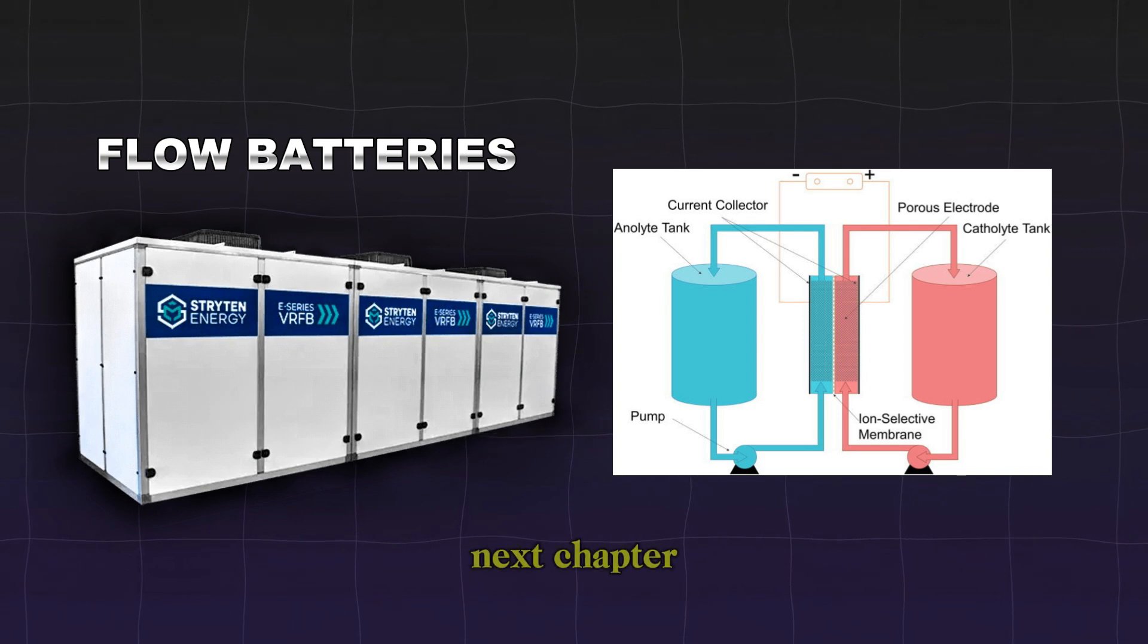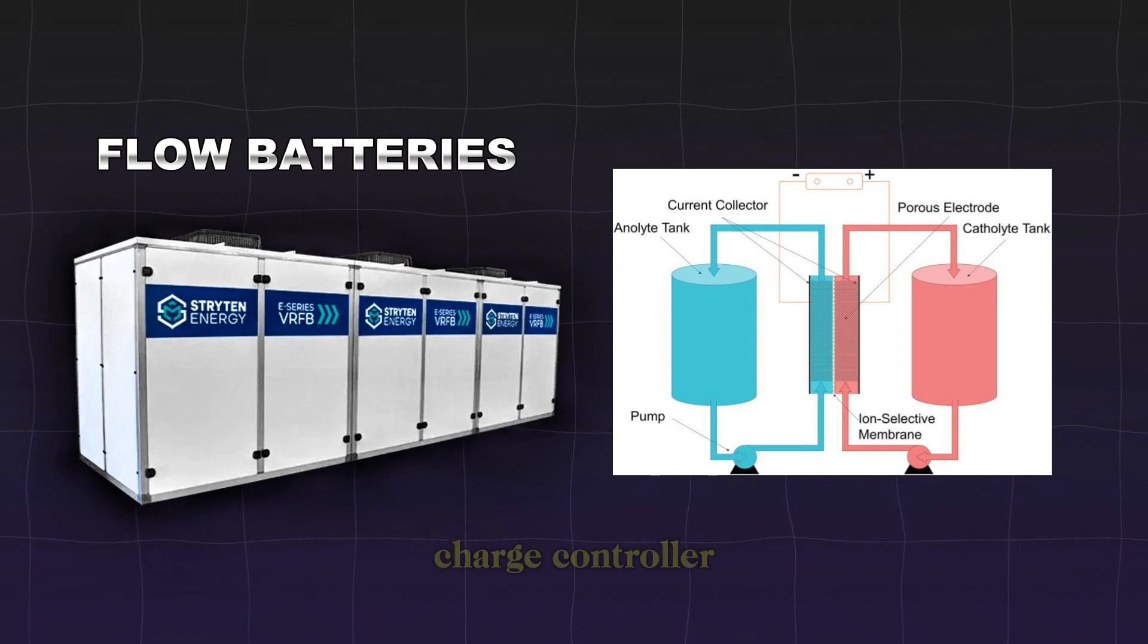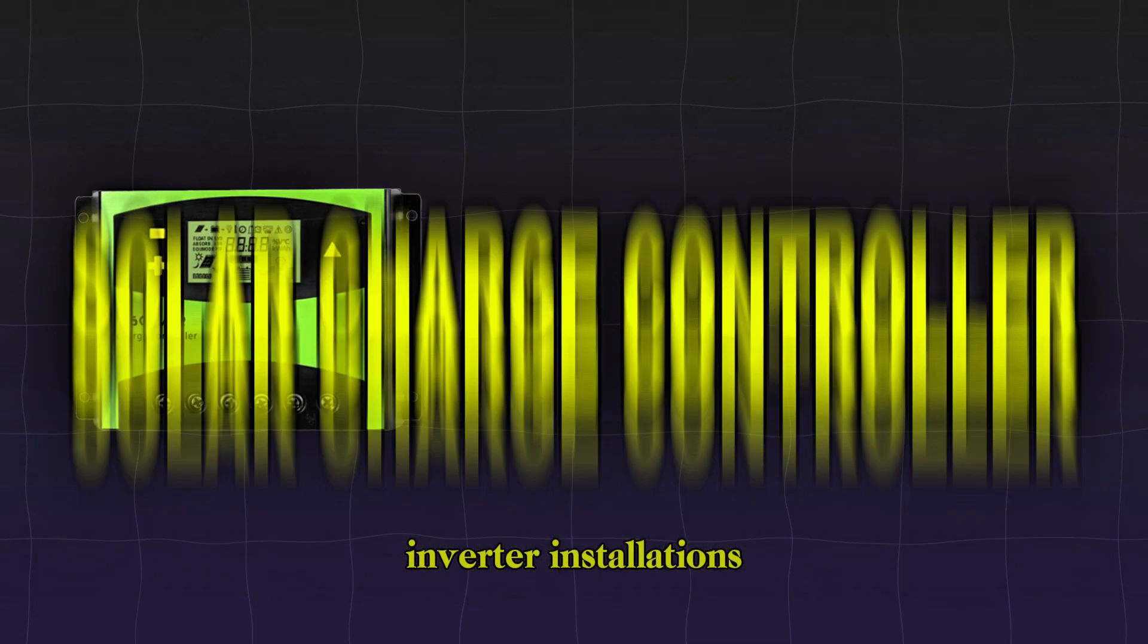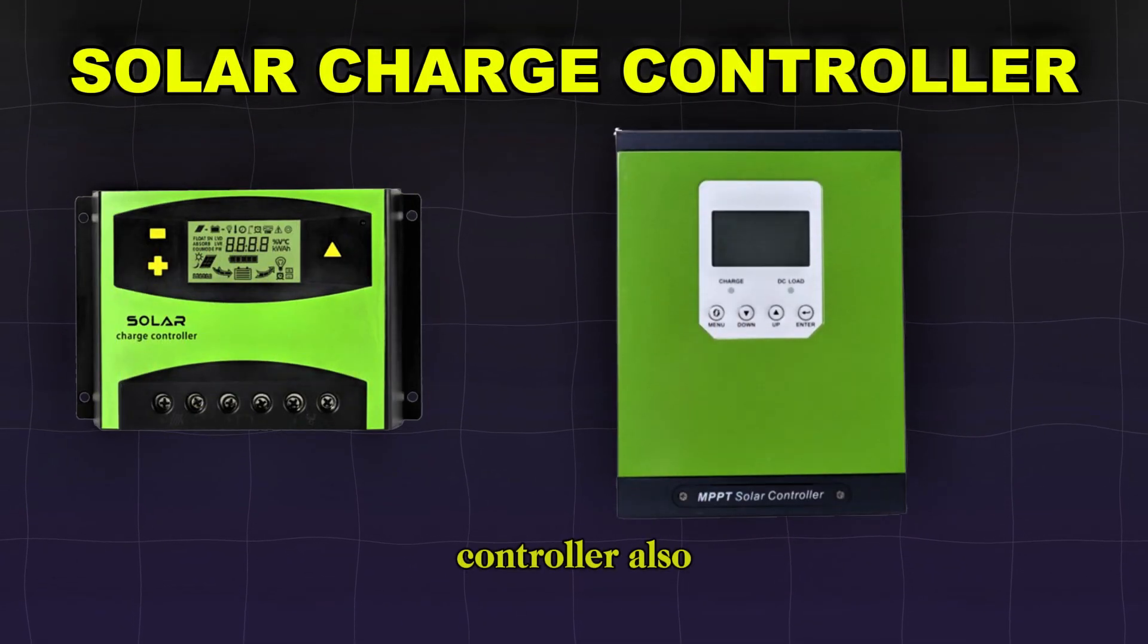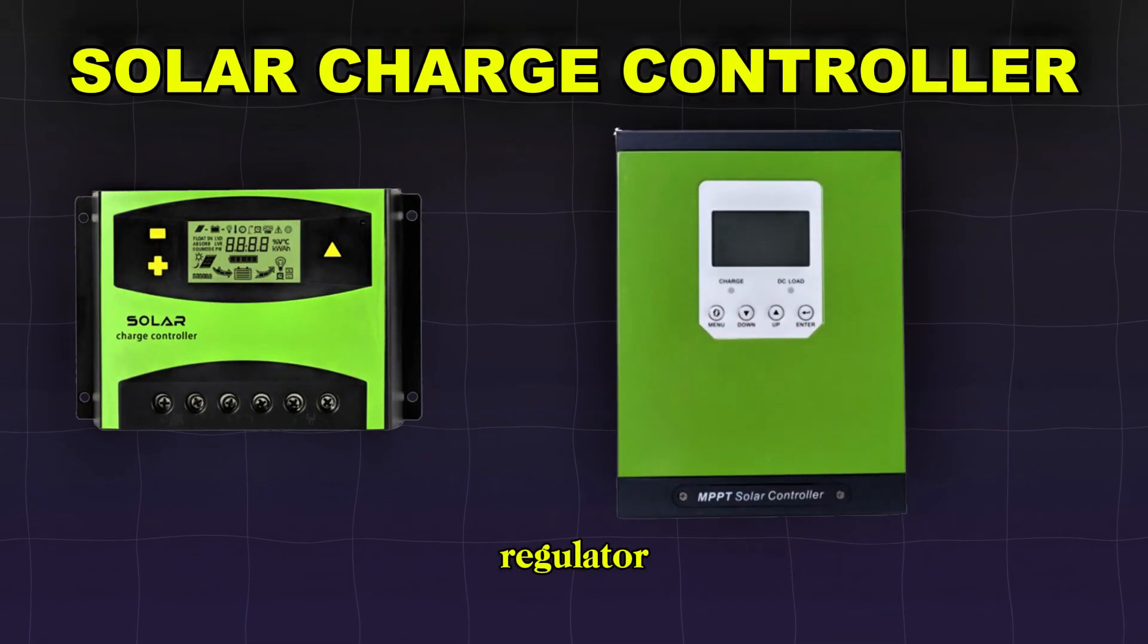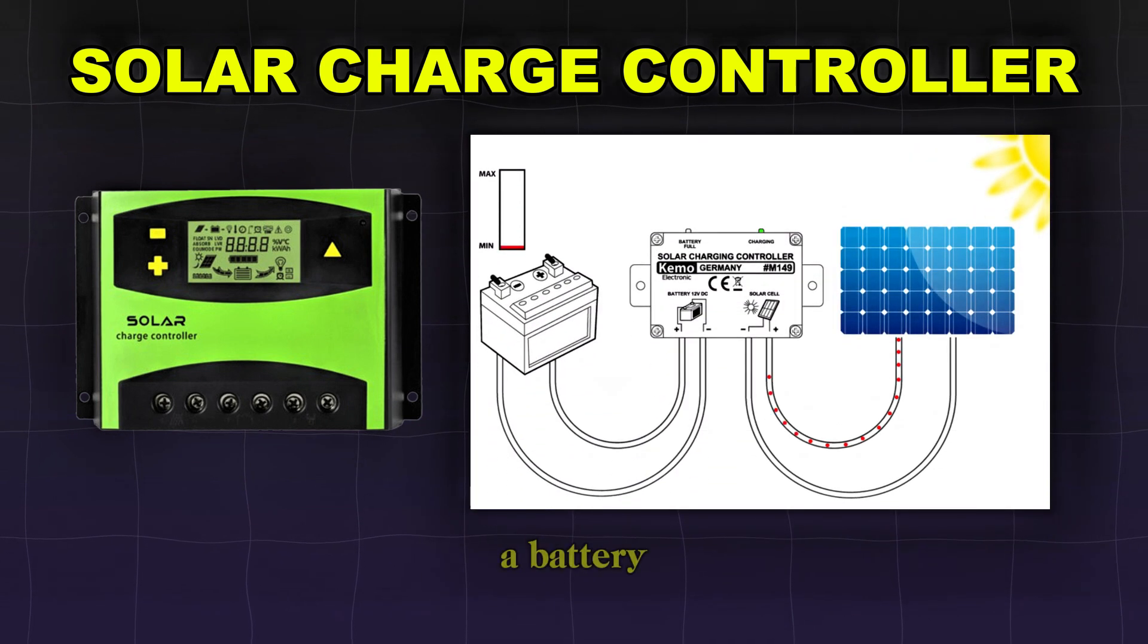So now let's go to the next chapter, where we will talk about solar charge controller. In solar inverter installations, a charge controller, also known as a charge regulator, regulates the voltage and current from solar panels to a battery, preventing overcharging and ensuring efficient energy transfer.